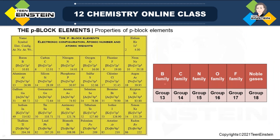Groups are also named after the first member of each group — boron family, carbon family, and so on. A reference table lists all p-block elements with their name, symbol, electronic configuration, atomic number, and atomic weight.